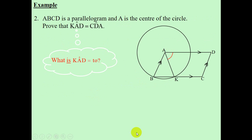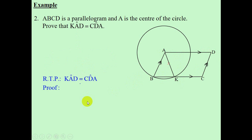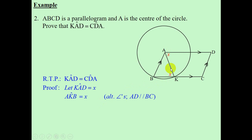Let's move on to another example. We want to prove that angle KAD is equal to angle CDA. I'm going to use the X technique. Let angle KAD equal to X. Which other angles will be equal to X? Angle AKB is equal to X — the reason is alternate angles, the lines are parallel. Are there any other angles equal to X? We have angle B, which is equal to X, and the reason is radius — AB and AK are two lines produced from the center of the circle to the circumference, therefore AB equals AK, radii.